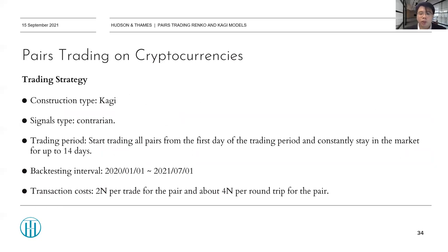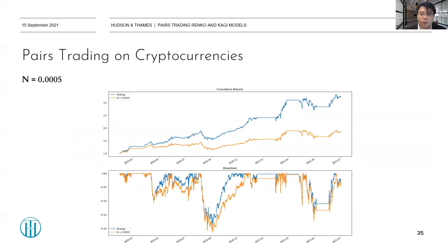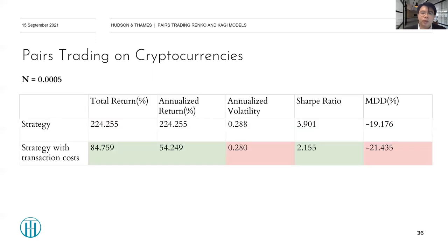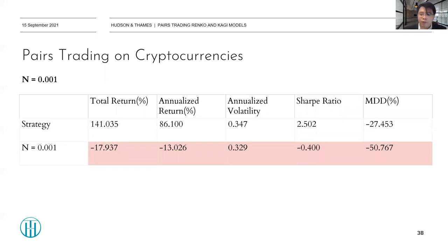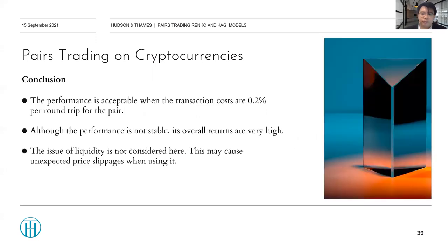Backtesting was conducted from 2020 to mid-2021, with transaction costs of 4N per round trip per pair. When N equals 0.05%, the strategy returns are acceptable but risks are not small. When N equals 0.1%, returns become negative, showing that transaction costs have a significant influence on this strategy. In conclusion, although performance is not stable, overall returns are very high when transaction costs are 0.2% per round trip per pair. It should also be noted that liquidity is not considered here, which may cause unexpected price slippage.